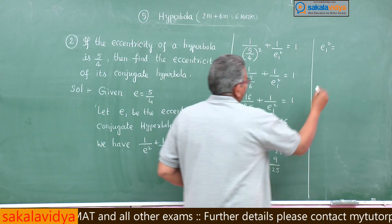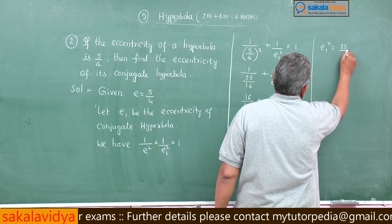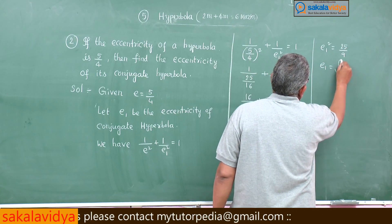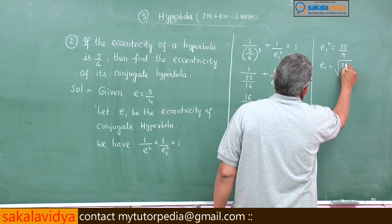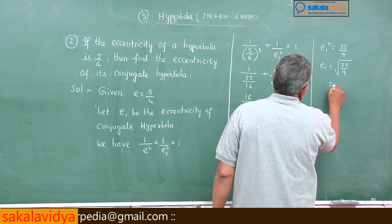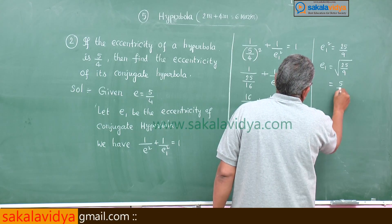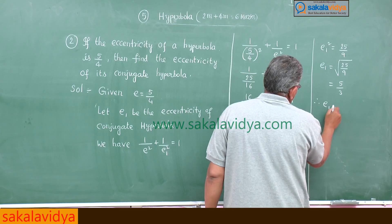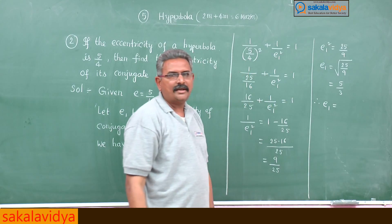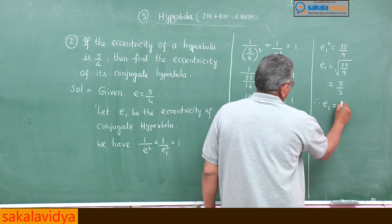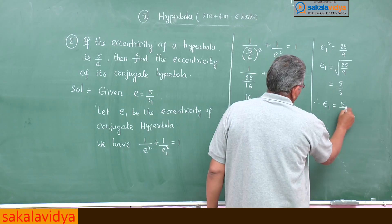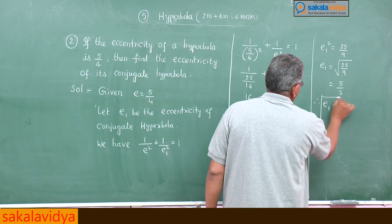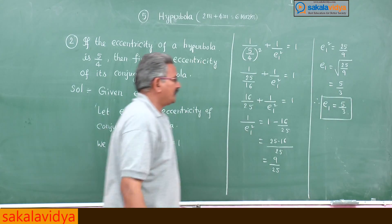So E₁ = √(25/9) = 5/3. Therefore, the eccentricity of the conjugate hyperbola is E₁ = 5/3.